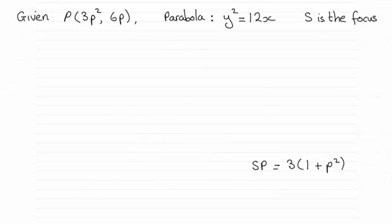Hi. Now for this question we were given that P had coordinates 3p squared, 6p. It was a point that lies on this parabola with equation y squared equals 12x and S is the focus. And what we had to show was that SP equals 3 times all of 1 plus p squared.